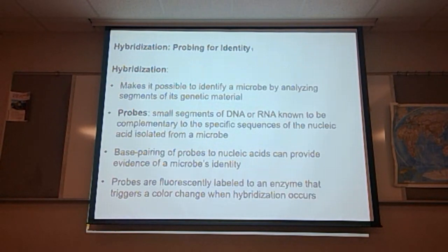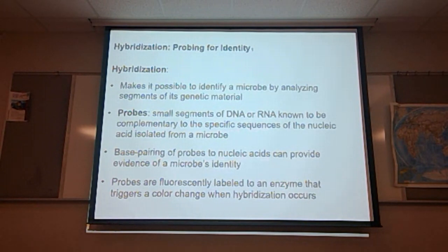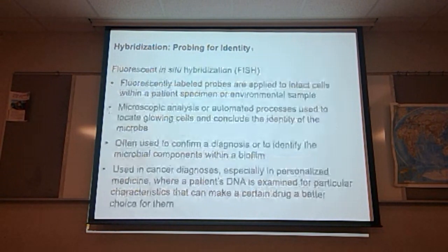Hybridization makes it possible to identify a microbe by analyzing segments of its genetic material. Probes are small segments of DNA or RNA known to be complementary to a specific sequence of nucleic acid isolated from a microbe. If we know what organism has sequences at a particular location and the probe binds there, we know what organism we're dealing with. The probes are fluorescently labeled to an enzyme that triggers a color change when hybridization occurs.